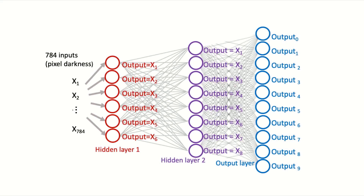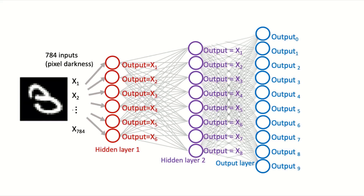The outputs of each of the neurons in the output layer will be a probability value, so each neuron will output a value between 0 and 1 that represents how likely the network thinks that the input data is the corresponding digit. So when the network is presented with an image of the number 3, we want the third neuron to output a probability of 1 and the rest of the neurons to output a probability of 0.